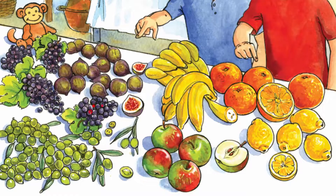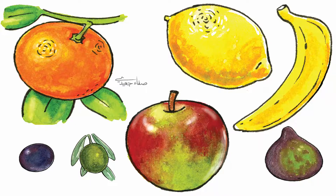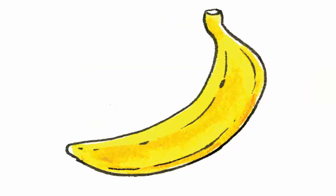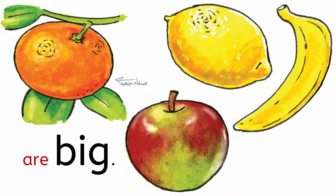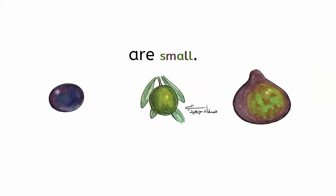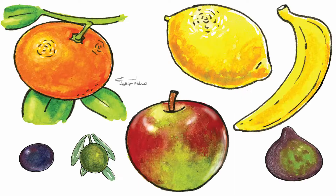What's this? It's a grape. It's small. What's this? It's an olive. It's small. What's this? It's a fig. It's small. Grapes, olives and figs are small.